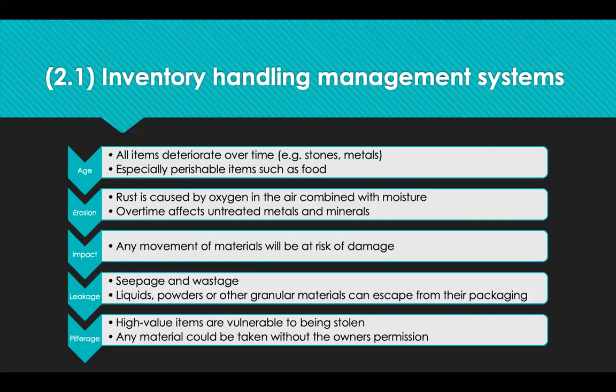From an age point of view, all items will deteriorate over time, especially items that are perishable, like food. Erosion or corrosion is where rust is caused by oxygen in the air combined with moisture, and over time this affects untreated minerals and metals. In terms of impact, any movement of materials carries a risk of damage. Leakage, seepage and wastage come from liquids, powders and other granular materials that can escape from their packaging. And pilferage — a fancy word for stealing and theft — means high value items are vulnerable to being stolen, and any material could be taken without the owner's permission.